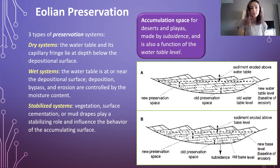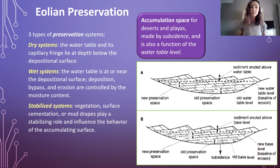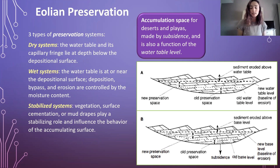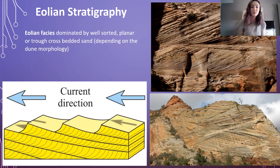There are three main types of preservation systems for aeolian deposits. We have dry systems, where the water table and its capillary fringe lie at a depth below the depositional surface. Then we have wet systems, where the water table is at or near the depositional surface, and deposition, bypass, and erosion are controlled by the moisture content. And then we have stabilized systems, where vegetation, surface cementation, or mud drapes play a stabilizing role and influence the behavior of the accumulating surface.